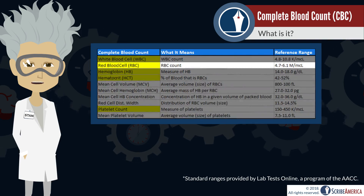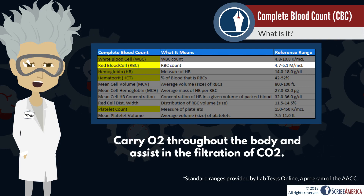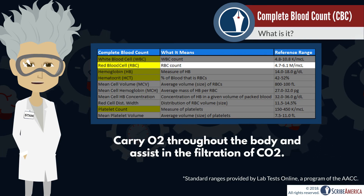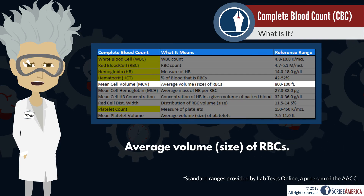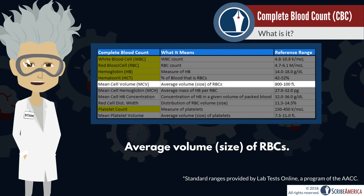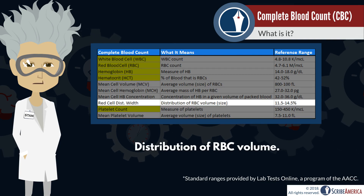Next, we have red blood cell count, or RBC. As you may have put together, it's the number of red blood cells you have. Red blood cells carry oxygen throughout the body and assist in the filtration of carbon dioxide. Mean cell volume indicates the average volume or size of a patient's red blood cells, and red cell distribution width indicates the distribution of cell volumes.